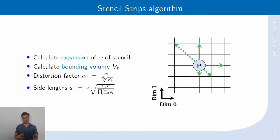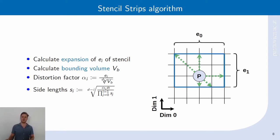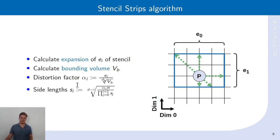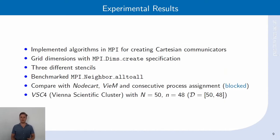That is why we use the expansion of the stencil in each direction. This is depicted here: lambda for dimension 0 gives one expansion, and lambda for dimension 1 gives another expansion. We calculate a distortion factor and proceed to determine the side length of the strips using a recursive formula. That was our last algorithm, and we will now proceed by showing the experimental results.